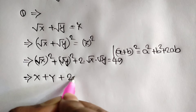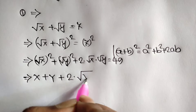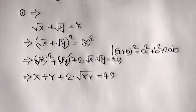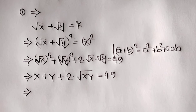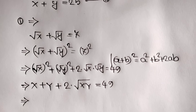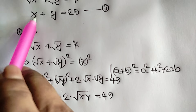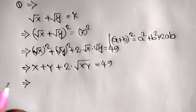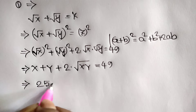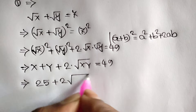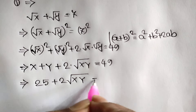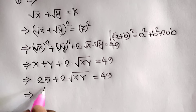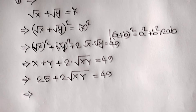So we have x + y + 2√(xy) = 49. Since x plus y is equal to 25 from equation number 2, we can substitute and write 25 plus 2·√(xy) = 49.